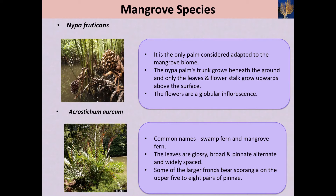When considering Acrostichum, it is commonly known as swamp fern or mangrove fern. The leaves are glossy, broad, and pinnate — alternate and widely spaced. Some of the larger fronds bear sporangia on the upper five to eight pairs of pinnae. These are the major characteristics of the different mangrove species.